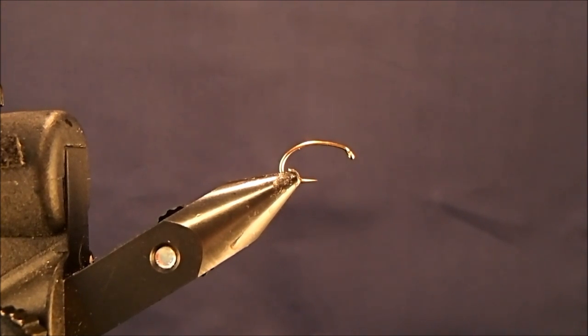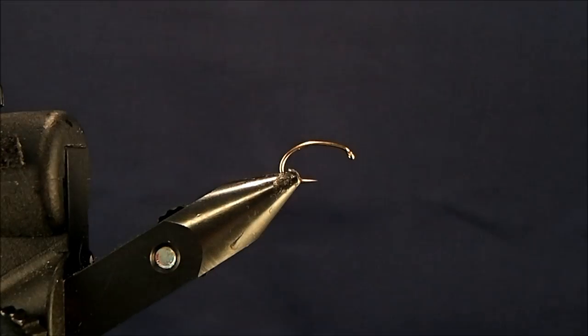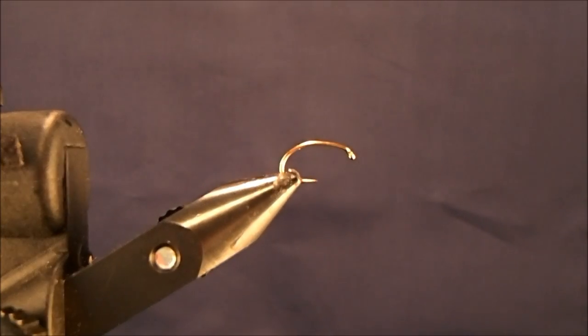This fly is Hammer Creek's CDC Brassy. I call it a CDC Brassy Flashback, but that would be too long of a name. So I'm just starting off here with a size 12 scud hook, and I tie these down to 16s.